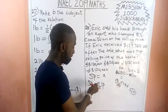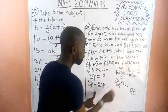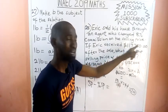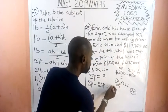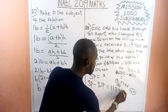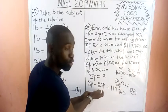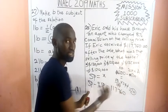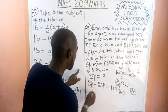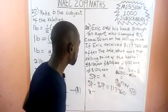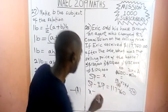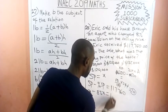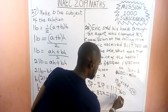So: selling price minus percentage of selling price equals the amount Eric is given. The selling price is x. The commission is 8% of x, which is 0.08x. And Eric received $1,177.60. So we have: x minus 0.08x equals $1,177.60.